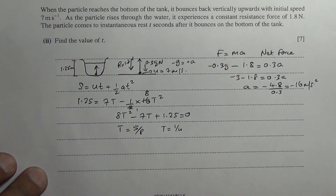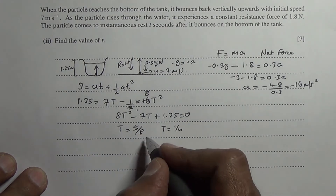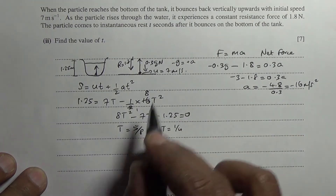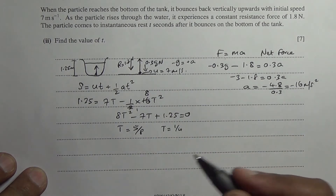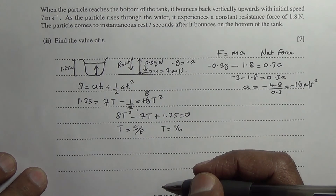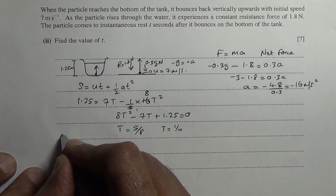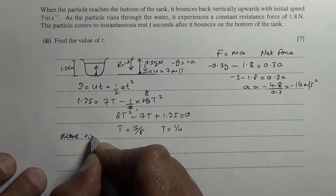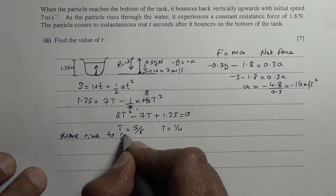The time 5/8 corresponds to coming back down because it takes more time to come down — the speed going down is less, so it takes longer. The upward time is confirmed as 1/4, which is 0.25 seconds.